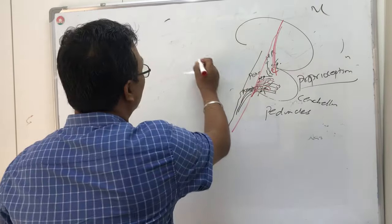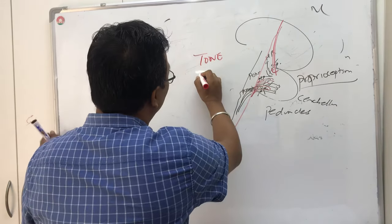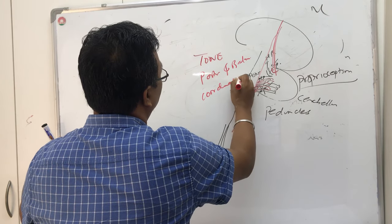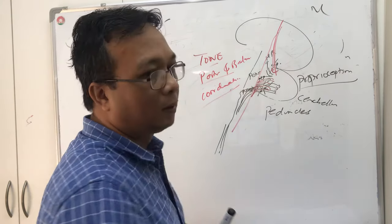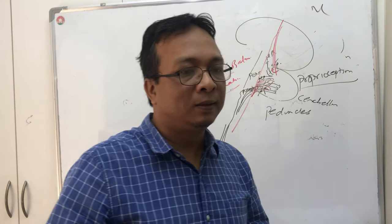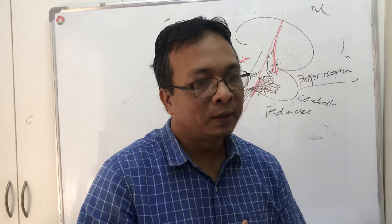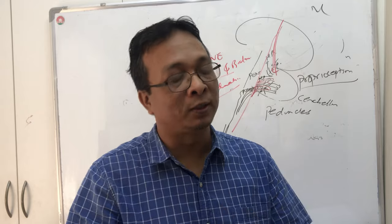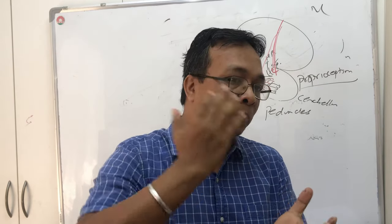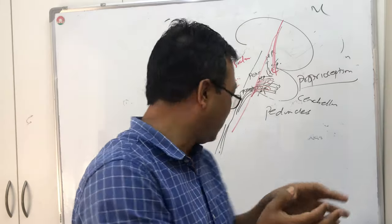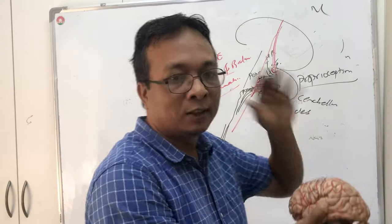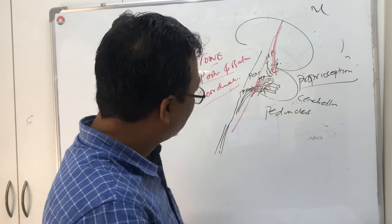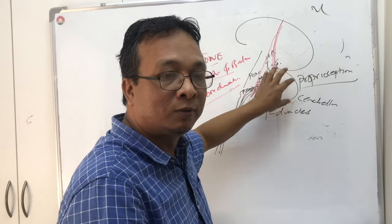The three functions again: tone, posture and balance, and coordination. After this anatomy, what are the cerebellar disorders? The cerebellum is not so protected like the cerebral cortex - it is below the cerebral cortex, lying just behind your neck, so it is not so well protected and there is always a chance it gets injured.